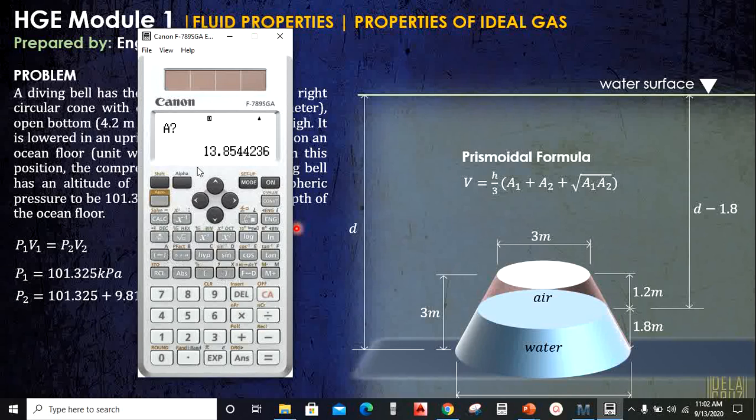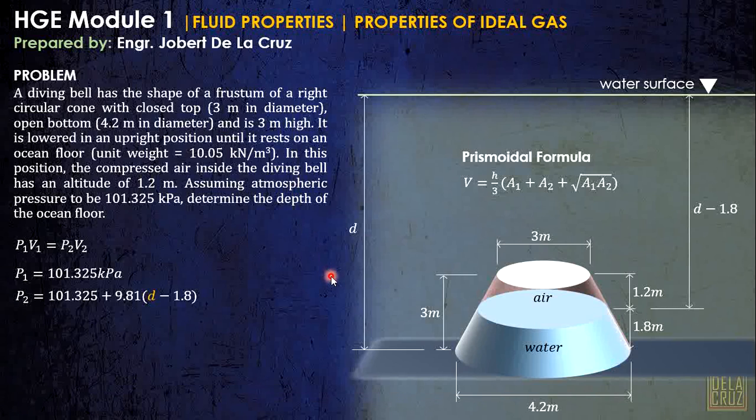Now, if I press calc, it will ask what is area 1. Let's call this area 1 at the top. And that is pi over 4. This is a circular polygon. So, I will input the calculator pi over 4, that is pi over 4. It's easier to input as 0.25 pi. Pi over 4 times diameter squared. Now, area 2 at the bottom. Take note that is 4.2 meters in diameter. So, pi over 4 times 4.2 squared. After this, this will be our volume, 30.82 cubic meters.